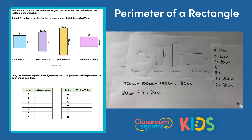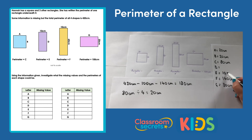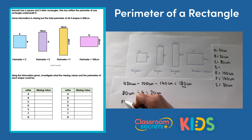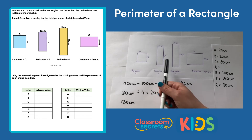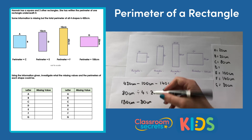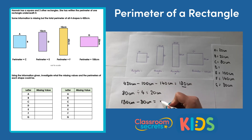That leaves me with the perimeter of E being 100cm. Because my remaining value of 180cm — which was the combined perimeter for both of these shapes — subtract 80cm, the perimeter of my square, leaves me with 100cm.